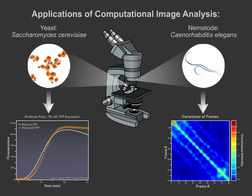Computational image analysis is a powerful tool that allows us to collect, reveal, and analyze important biological data, such as gene expression in yeast cells or the movement patterns of C. elegans. Image analysis makes sure that we get the data we need for high-quality mathematical models.